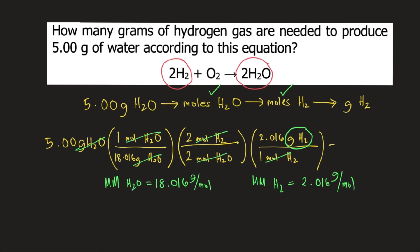If you solve this in your calculator, you will get approximately 0.560 grams of hydrogen gas. And this is the answer to the question.